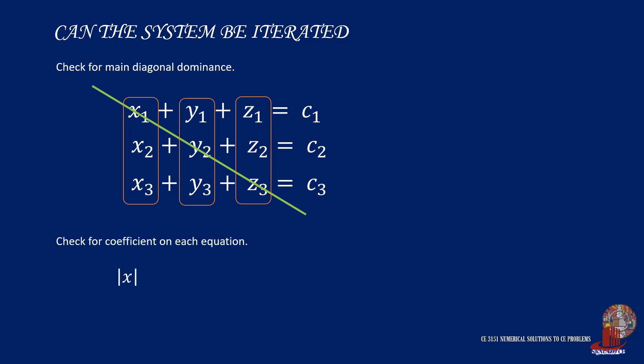For the equation of x, the absolute value of the coefficient of x should be greater than or equal to the summation of the absolute values of y and z. The check for the equation of y is also taken as greater than or equal to the absolute value of x plus the absolute value of z. Then, the absolute value of z should also be greater than or equal to the absolute values of x and y added together.